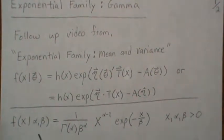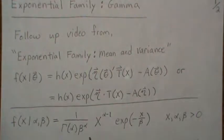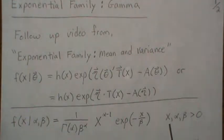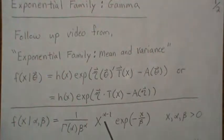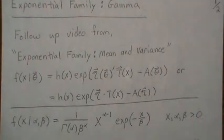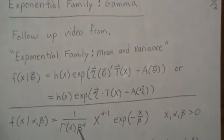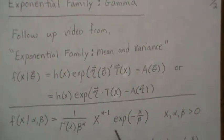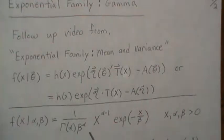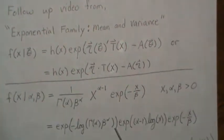The density for a gamma distribution can be written like this. All of x, alpha, and beta have to be positive, so there are two parameters alpha and beta in this distribution. We need to transform it into the canonical exponential form, so we need to take the log and then e to that expression to get it into exponential form.